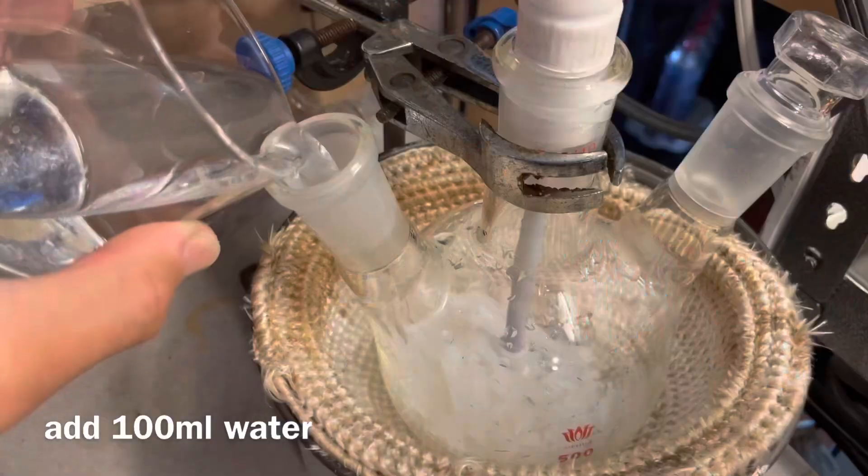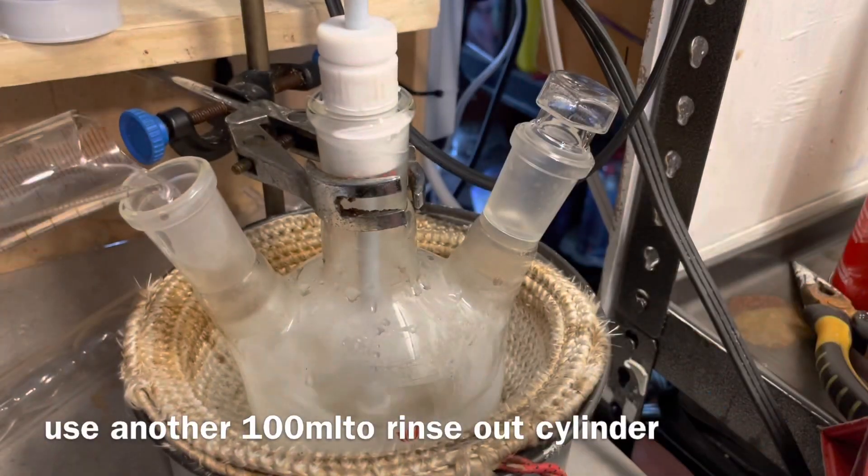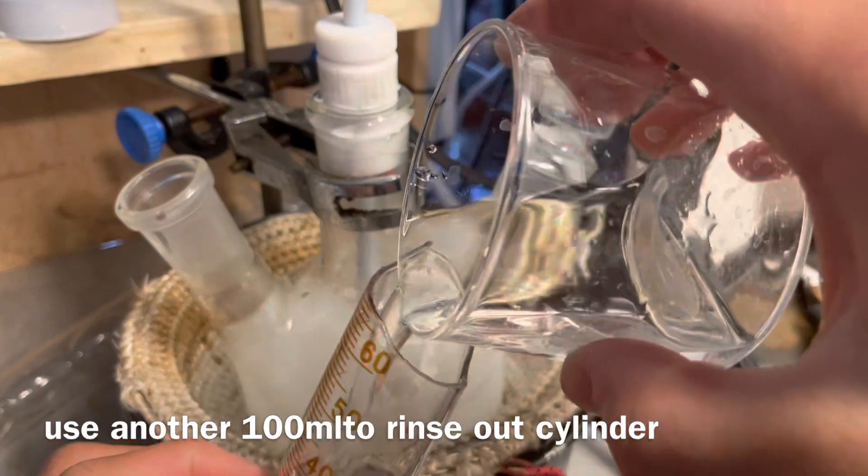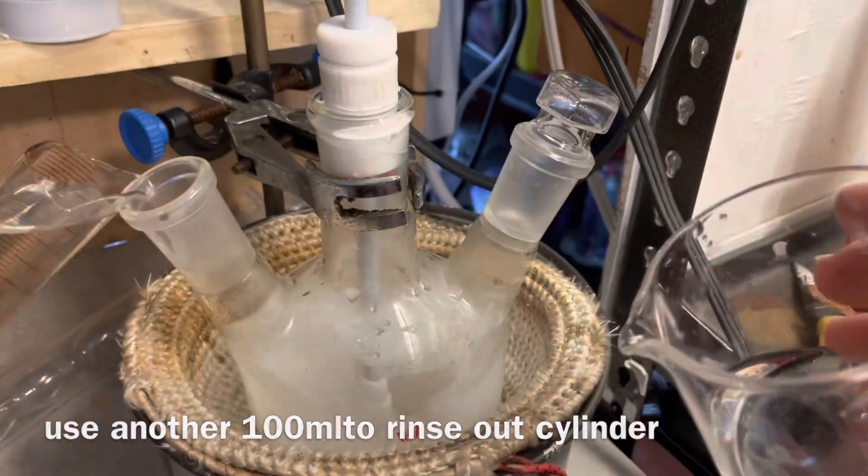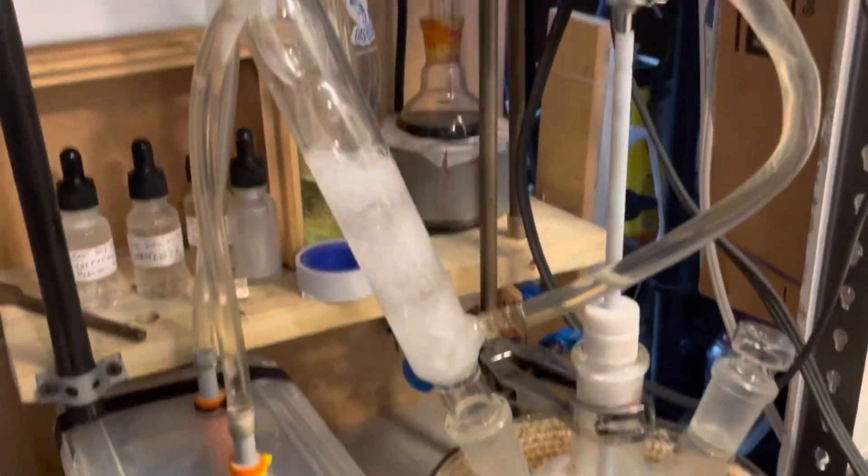Now add 100 milliliter of water and 35 milliliter of sulfuric acid, and then rinse out your sulfuric acid measuring apparatus with some more 100 milliliter of water. Add on a reflux condenser, and now we have to bring it to a light reflux.